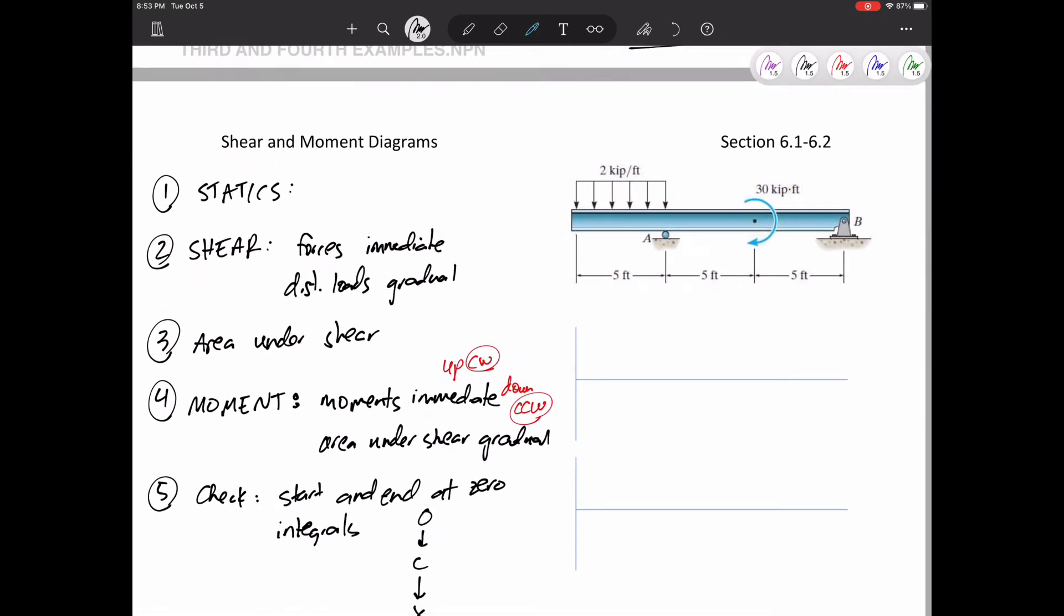So let's do this one. I've got a roller at A, so I know I've got that AY. I've got a pin at B, so I know I've got that BY. I'm going to sum the forces in Y equals zero, sum the moments equals zero. So I've got to take care of that distributed load. That distributed load is two kips per foot, and it is over five feet. So it's really a 10-kip force. Put it at the centroid of that distributed load.